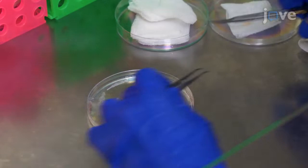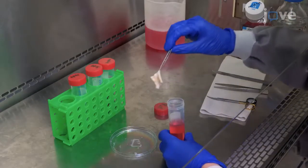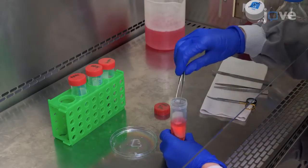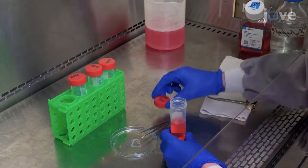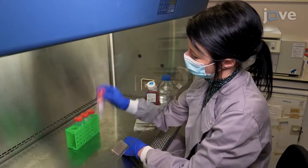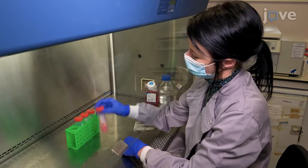When all of the fat has been removed, place the skin in 25 milliliters of HBSS supplemented with antibiotics for 10 minutes at room temperature with intermittent shaking to remove any residual blood and adipose tissue.